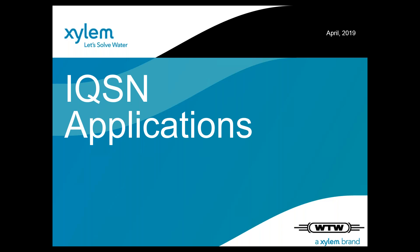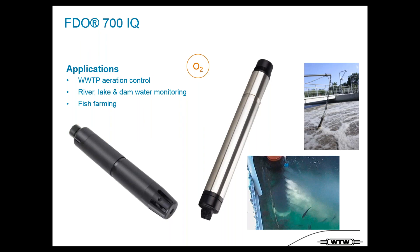Now a brief overview of IcoSensorNet applications. For DO measurement with the FDO sensor, the main applications are wastewater treatment plant aeration control, river, lake and dam monitoring, and fish farming. The FDO is suitable for all types of aeration control — SBR reactors, normal nitrification/denitrification, and special applications like anaerobic ammonium oxidation (anammox) treatment. It can cover the complete range of DO applications.